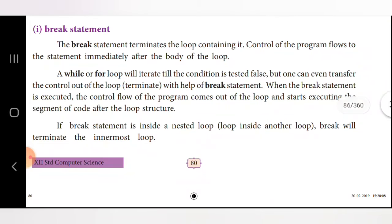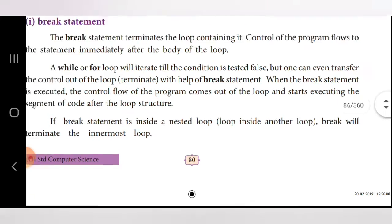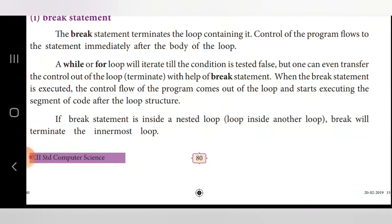The break statement terminates the loop containing it and control of the program flows to the statement immediately after the body of the loop. A while or for loop iterates till the condition is tested false, but one can transfer the control out of the loop using break. When the break statement is executed, the control flow comes out of the loop and starts executing the segment of code after the loop structure.